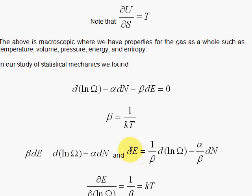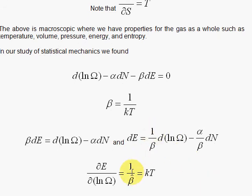So beta DE is the D log of omega minus alpha DN. And then we divide by beta, and now we can take the partial derivative of E with respect to this stuff here, the log of omega. And when we do that, we'll get 1 over beta, and 1 over beta is KT.